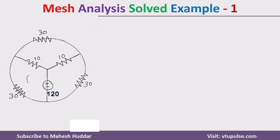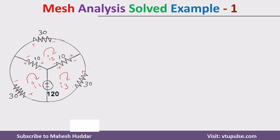For the first loop I will assign current as I1. For the second loop I will assign current as I2, and for the third loop I will assign current as I3. As per the currents, we need to assign the direction of the flow of current for each resistance — that is plus-minus, plus-minus — and for the second loop: 10 plus-minus, 30 plus-minus, 10 plus-minus, and for the third loop: 10 plus-minus, 30 plus-minus. Like this we need to assign the direction.